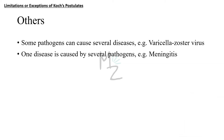There are certain other exceptions. Some pathogens can cause several diseases — for example, varicella zoster virus causes both chicken pox and shingles — but Koch said that a specific microbe is responsible for causing just a specific disease. Also, one disease can be caused by several pathogens; for example, meningitis is caused by bacteria, fungi, and viruses.